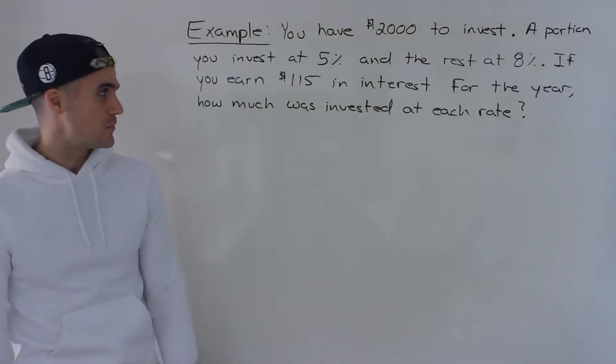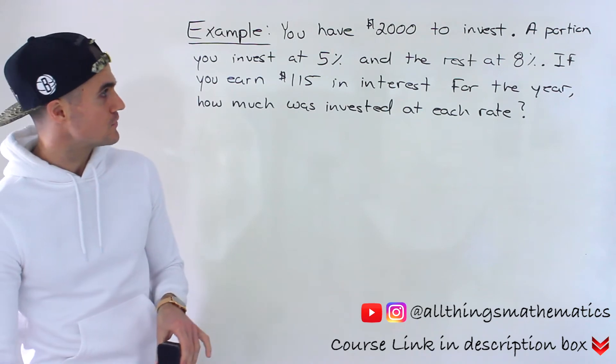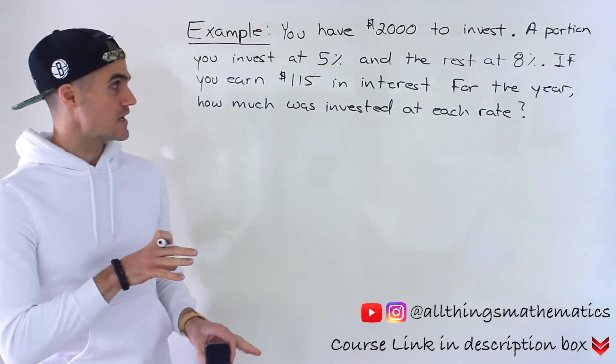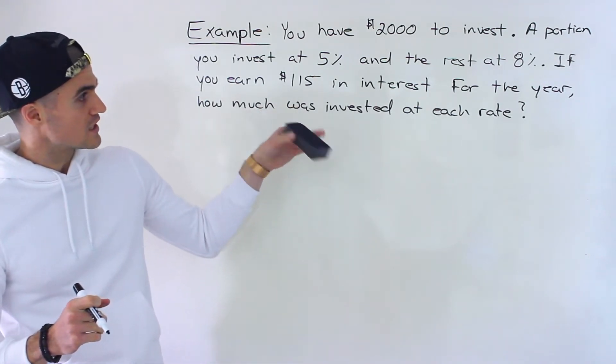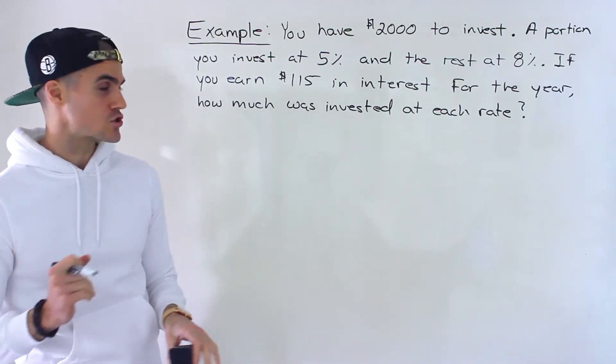What's up everyone? Patrick here and moving on to the next example. So you have $2,000 to invest. A portion of that $2,000 you're going to invest at 5% and then the rest you're going to invest at 8%. If you earn $115 in interest for the year, how much was invested at each rate?